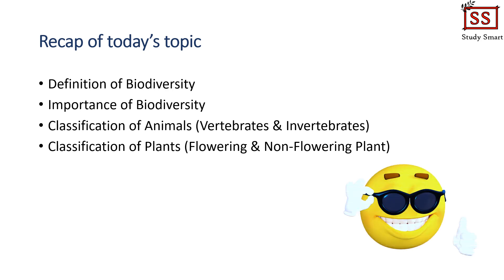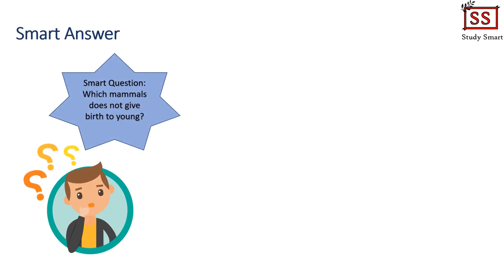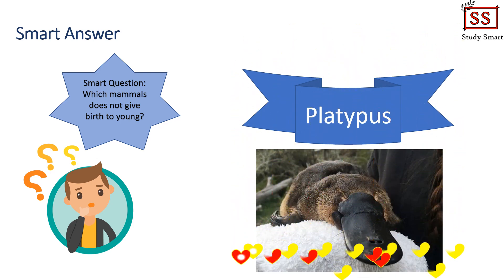Now is the time for the smart answer. If you remember, I asked which mammal does not give birth to young. Have you found the answer? The answer is: Platypus. Yes, the platypus is the mammal that does not give birth to young — it lays eggs instead. Congratulations to those who got the answer correct, and for those who got it wrong, do not worry — you have learned something new today.